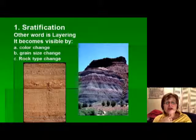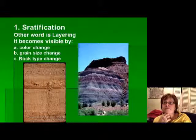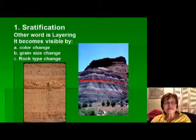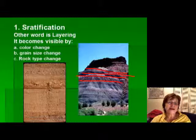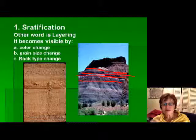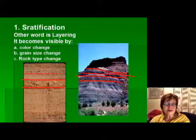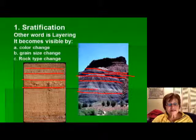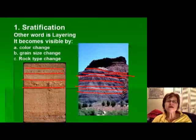The first sedimentary structure is stratification — you can also call it layering, lamination, sedimentary beds, or bedding; these are all synonyms. Basically, when you see differences in horizontal layering, that's stratification. We can see different layers because of grain size changes — finer, coarser, finer, coarser — or because of color changes.